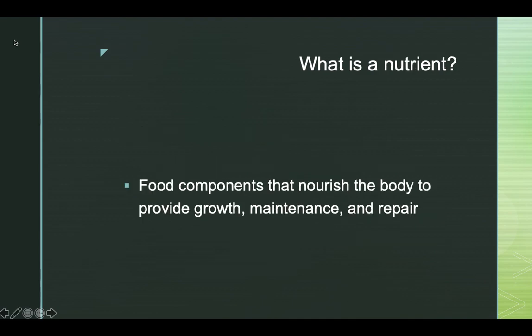So what is a nutrient? A nutrient is a food component that nourishes the body to provide growth, maintenance, and repair. There's two big categories of nutrients that we talk about, micronutrients and macronutrients.